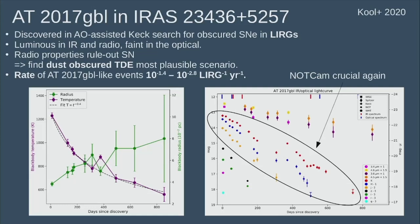We can get a rate from this, since it was part of a small survey to look for obscured supernovae. The rate is 10^-1.4 to 10^-2.8 - big uncertainty, but much higher than the expected TDE rate. The question is: are we therefore finding more TDEs in LIRGs? Is there some hidden population of TDEs?